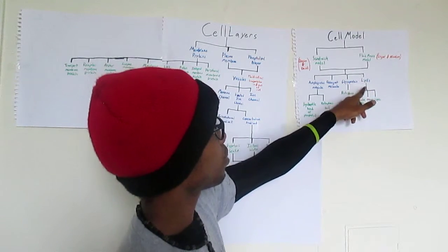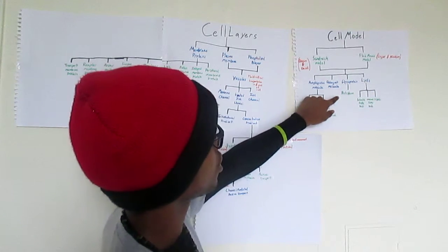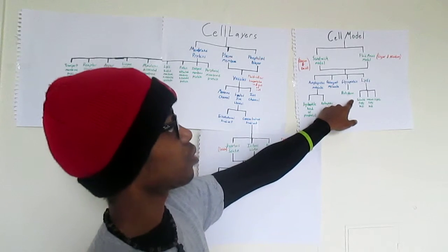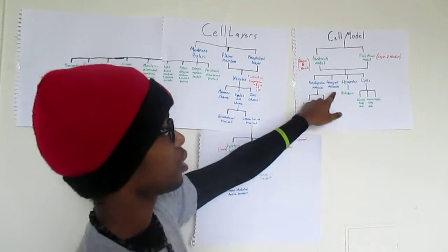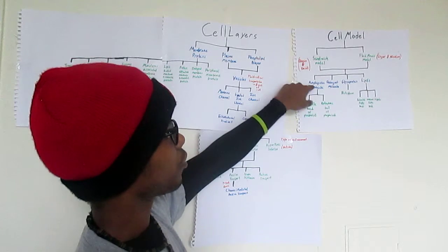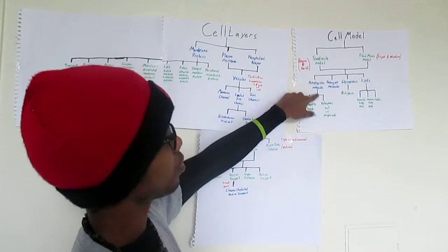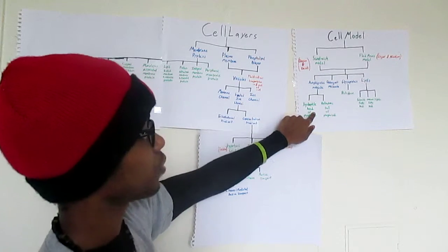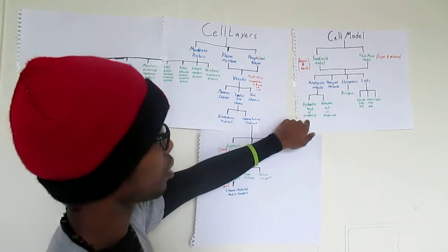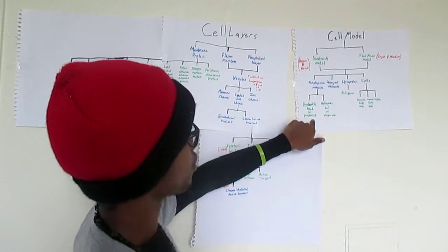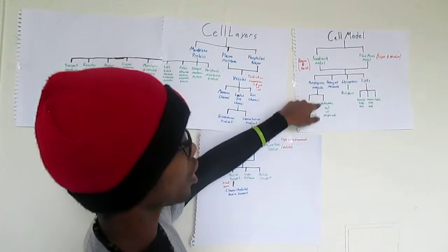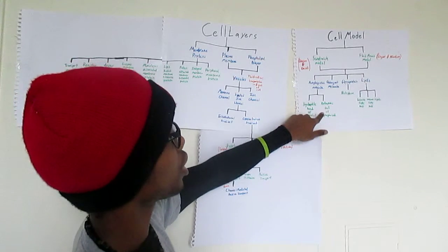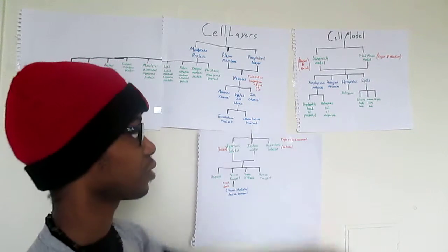The glycoprotein breaks down into the proteoglycan, and the amphipathic molecule breaks down into the hydrophilic head of phospholipid and the hydrophobic tail of phospholipid.